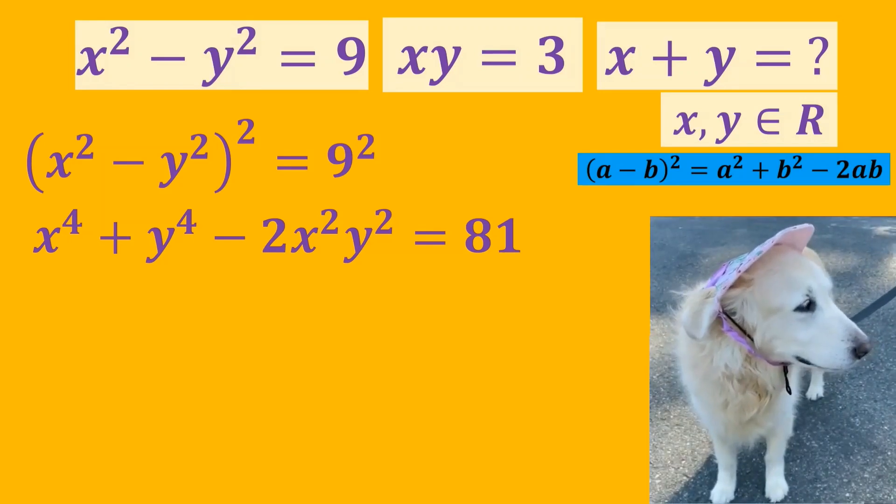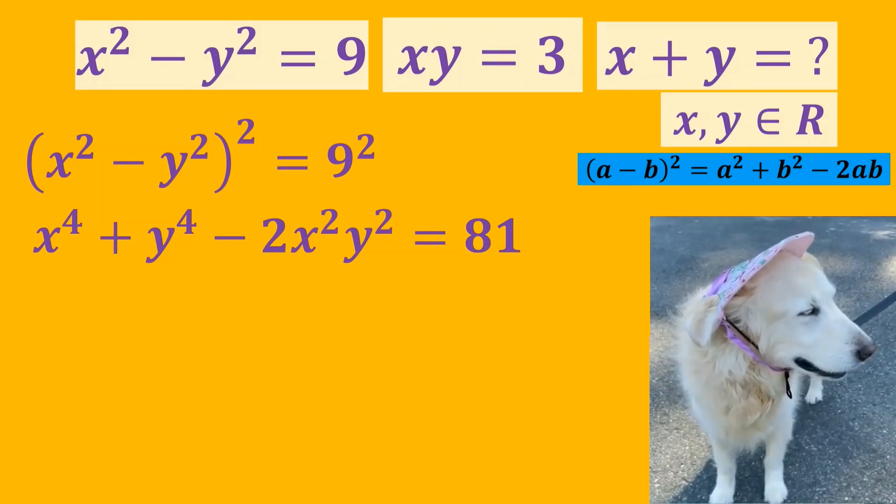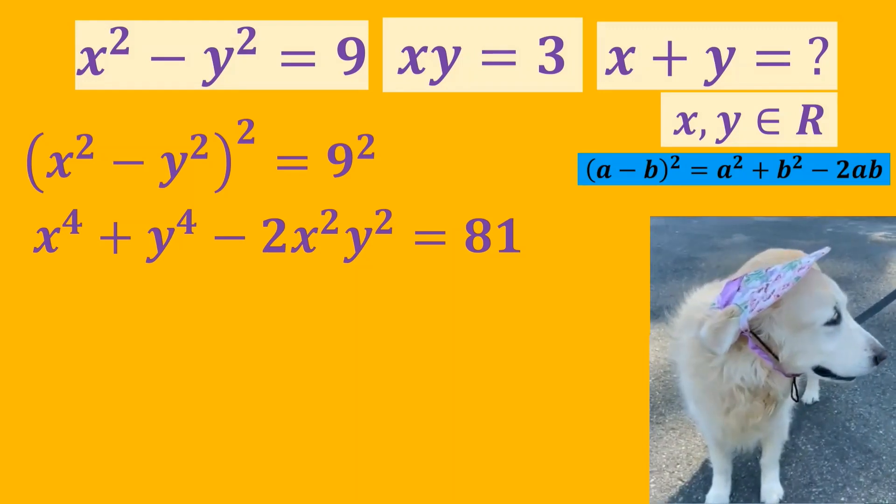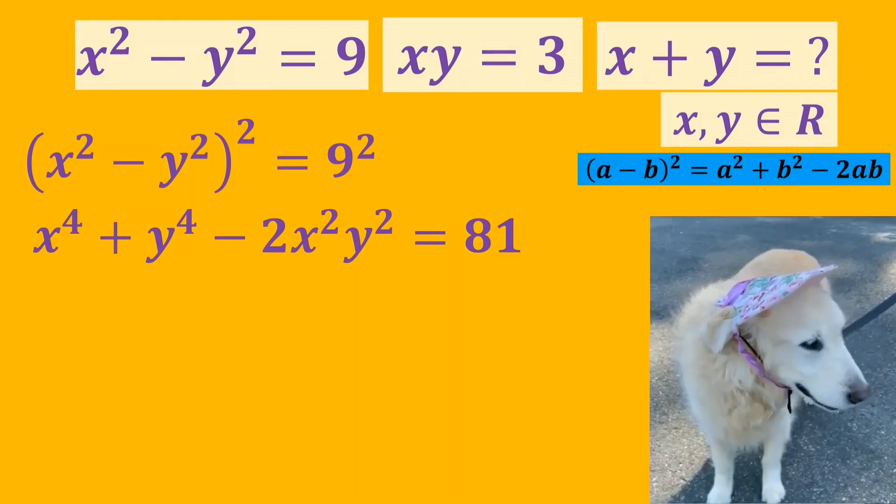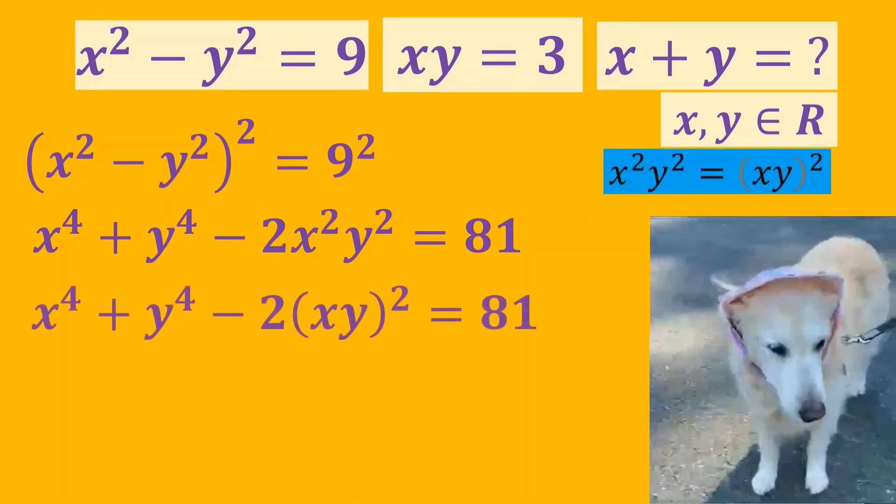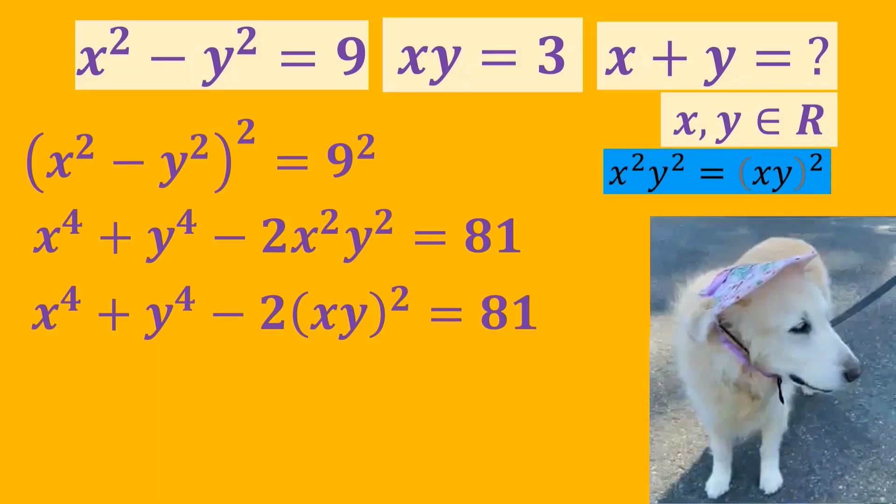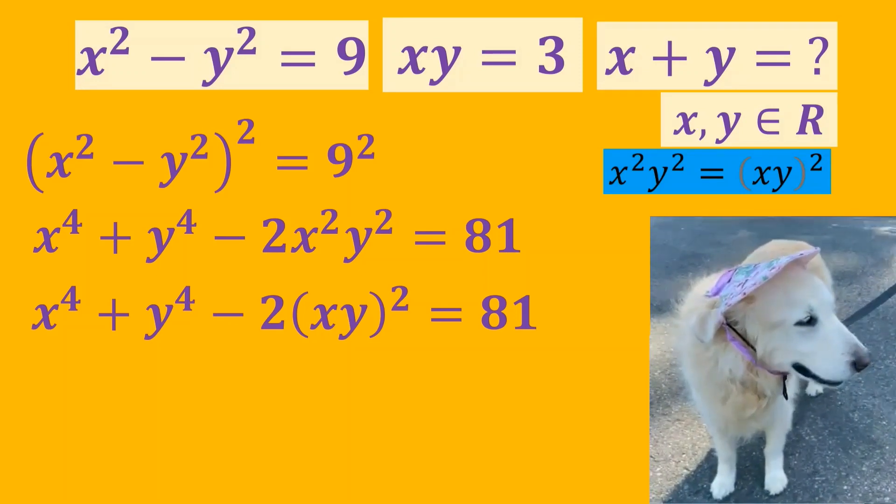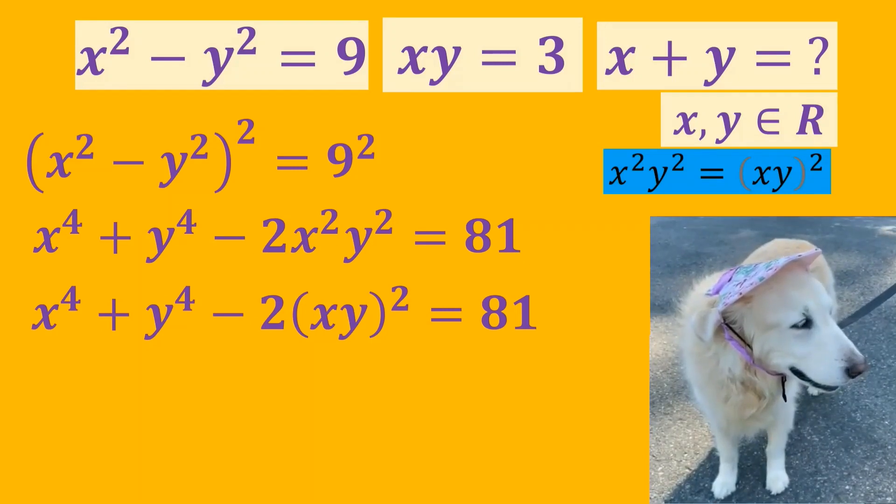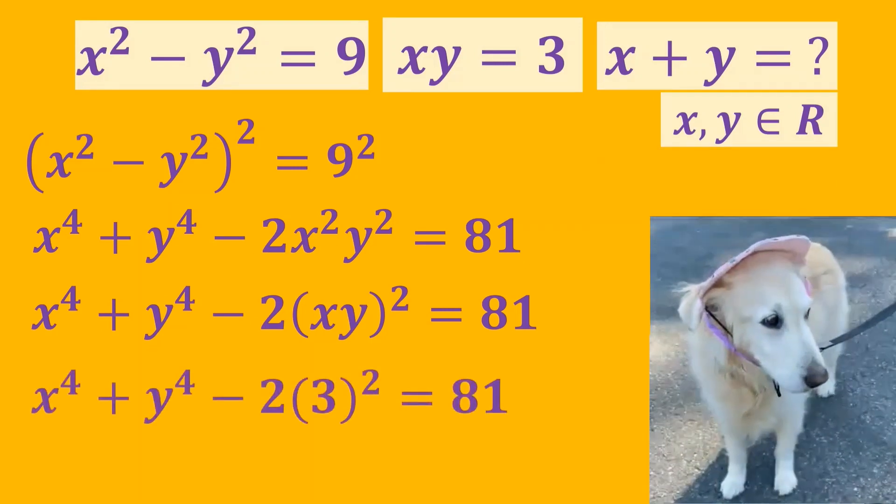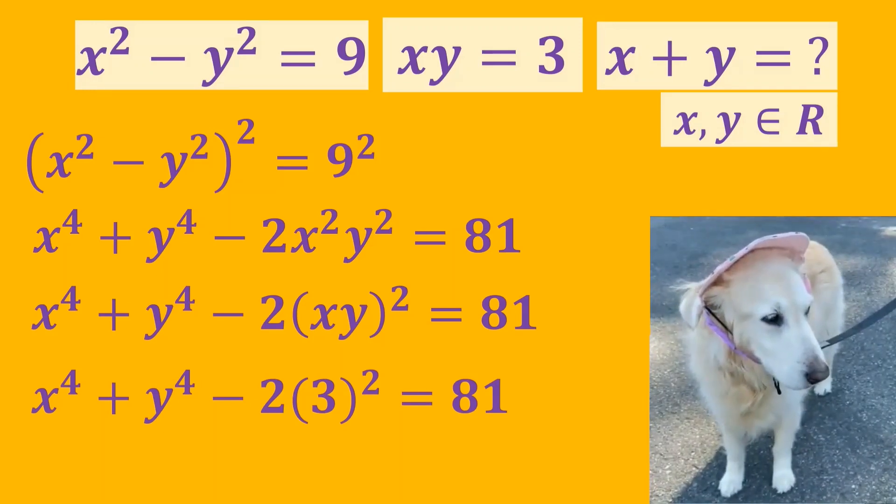We expand the parentheses by using perfect square identity. x squared times y squared can be written as xy squared. And we put 3 instead of x times y.